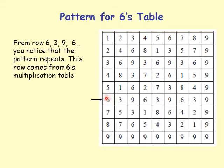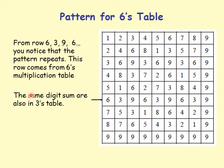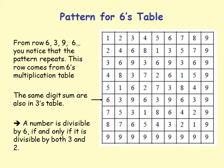The 3's table has the same digit sum set {3, 6, 9}. A number is divisible by 6 if and only if it is divisible by both 3 and 2 — meaning it must be even and its digit sum must be in {3, 6, 9}.